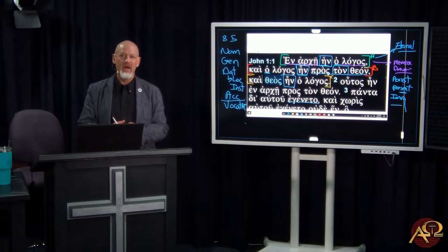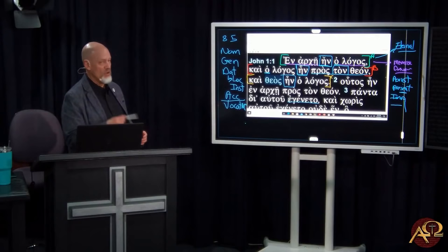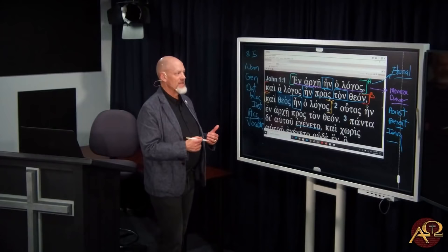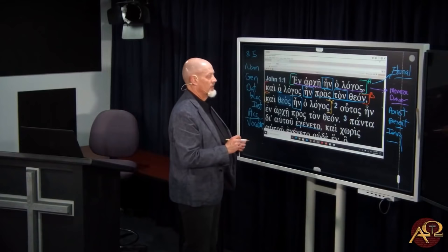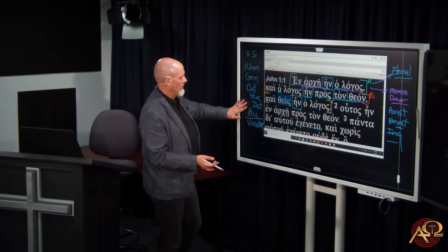Easily misrepresented by those who have an agenda in trying to insert something. And so we'll see that in the third clause here. But just be aware that's coming. So the first clause, in the beginning was the word, the word's eternal. And the word was with God. So the word has been differentiated from ton theon. There is a relationship between the logos and ton theon. We've only gotten through two clauses. We're not even at the end of the sentence yet.